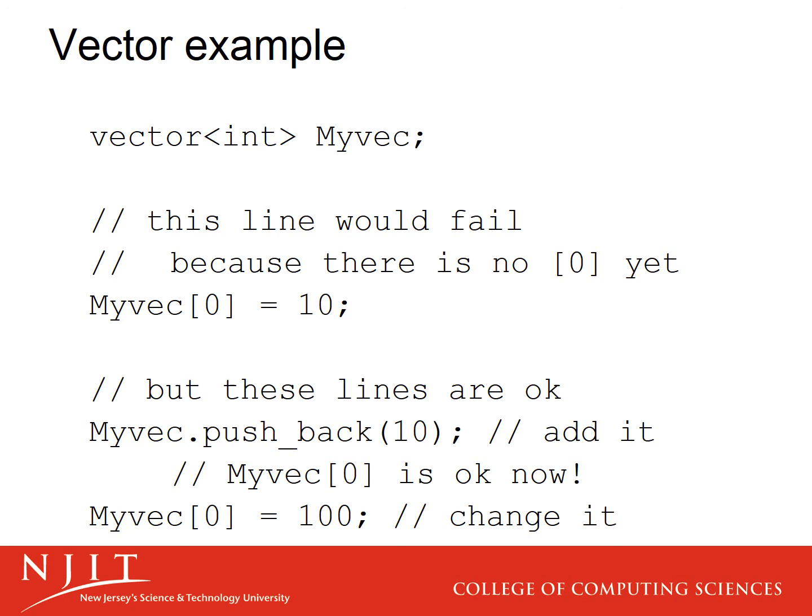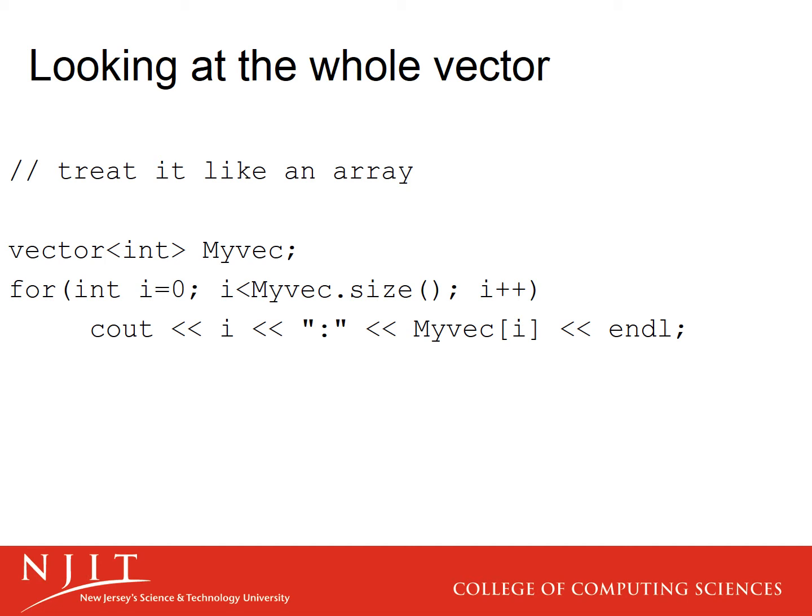Once you've got a vector full of integers, you might want to look through the whole vector. One way to do that is to treat the vector like an array since it has array semantics. You can write a for loop starting at 0 and going until myvec.size() — there's a dot-size member that tells how big it is. The entries are consecutive, and the loop will print out the value of i and whatever is at that position in the vector with a colon in between.